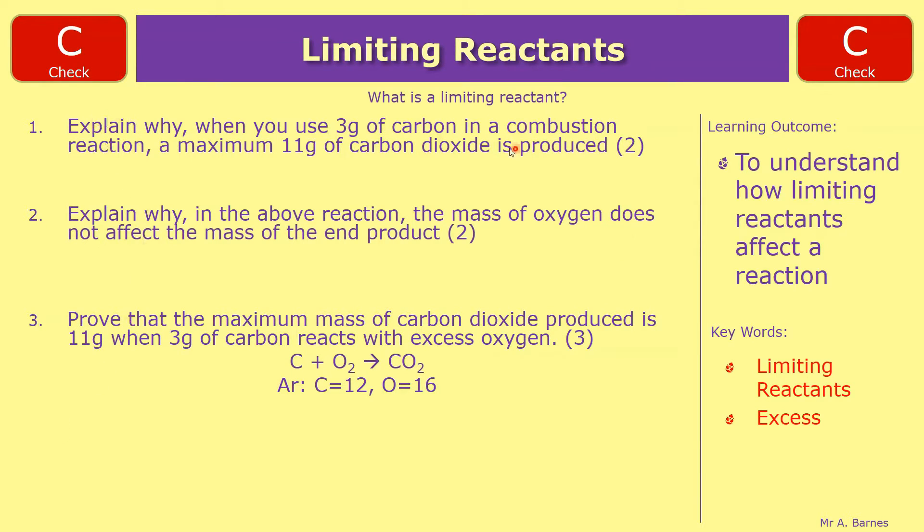Okay, let's go through then. So this is worth two marks: explain why when you use 3g of carbon in a combustion reaction the maximum of 11g of carbon dioxide can be produced. You could go into the calculation but that's not what this is looking for. We'll look at the calculation in question three. This is saying that the carbon is a limiting reactant for one mark, and then the second mark for saying once it's used up the reaction cannot continue.